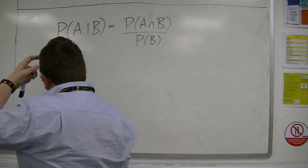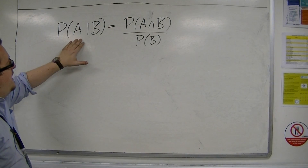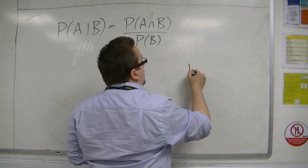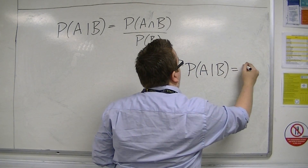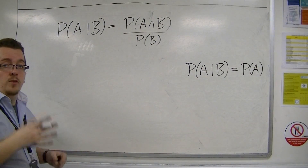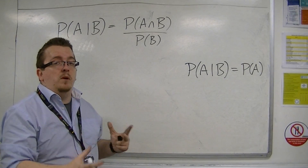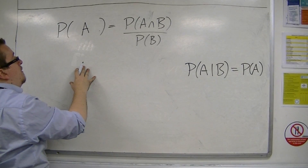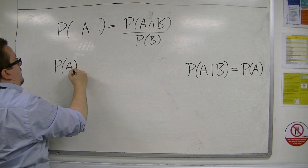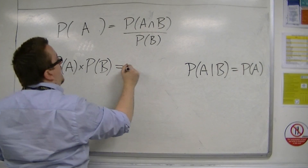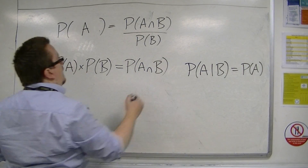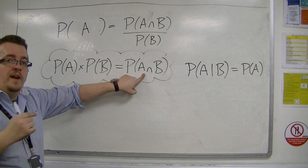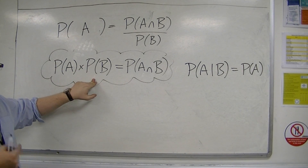If, on the other hand, they are independent, then the probability of A given that B has happened would be the same as the probability of A, because it doesn't matter whether B has happened or not. The probability of A given B would just be the probability of A. And so if I multiply both sides by the probability of B, then the probability of A times the probability of B equals the intersection. So if two events are independent, then the intersection of A and B will be just the probability of A times the probability of B.